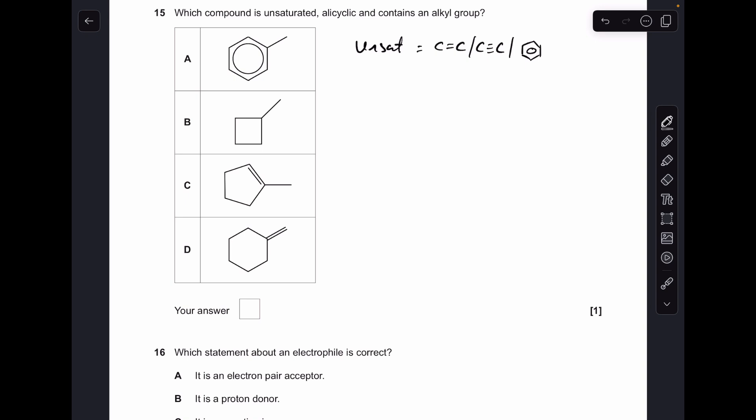Number 15, so we'll just go through the terms one at a time and rule things out as we go. So unsaturated, we have to have carbon carbon multiple bonds or a benzene ring, so that rules out B because there's none of those. Alicyclic, so it's got to be a ring but it can't be a benzene ring, so that rules A out. And an alkyl group is a group with the general formula CnH2n plus one. So on C we've got that CH3 group sticking out, whereas on D we've got a CH2 group sticking out. Which one follows that general formula for the alkyl group? C.